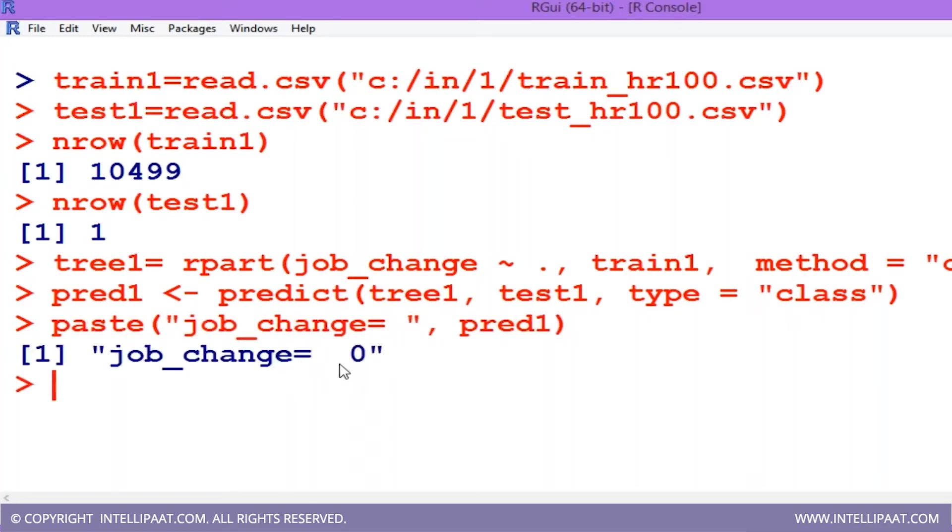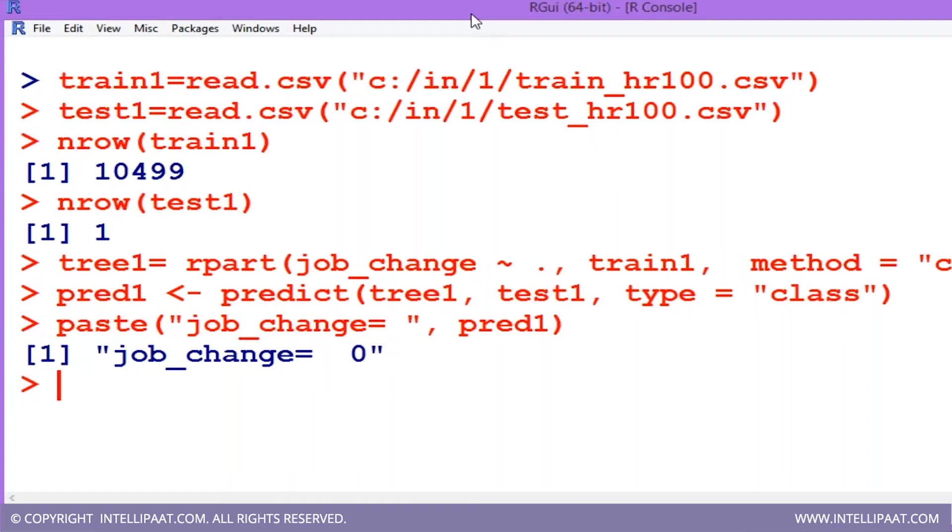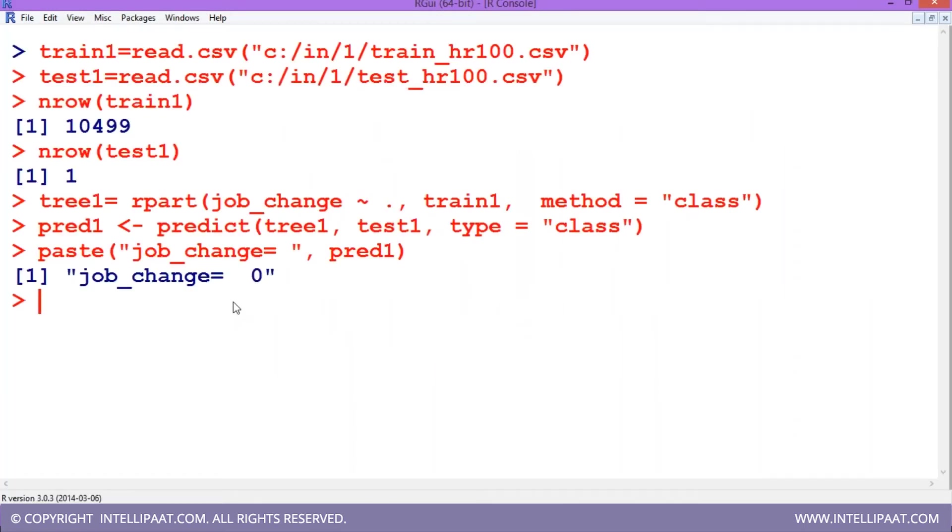It says job_change equals zero. It means job_change decision is false. This person is going to stay in the company. This is how in four steps I have done the machine learning and I am able to predict that result. At this point of time, you might be wondering that internally, how did the system perform this task?